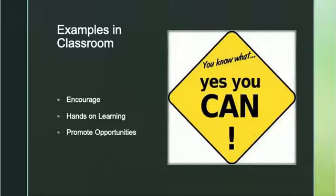Examples in the classroom include encouraging independent tasks, hands-on learning, and opportunities for discovery. A teacher should plan a variety of activities for the classroom that incorporate the different learning styles. The teacher should also get to know their students since each student develops at different times. You can use props and visual aids to promote learning, give students opportunities to classify and group information, and present brain teasers that require logical thinking.